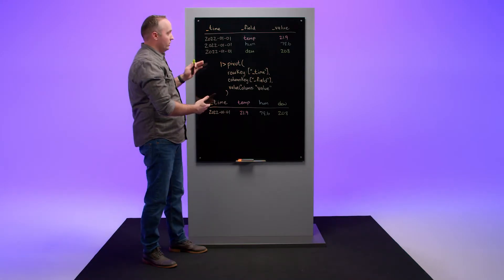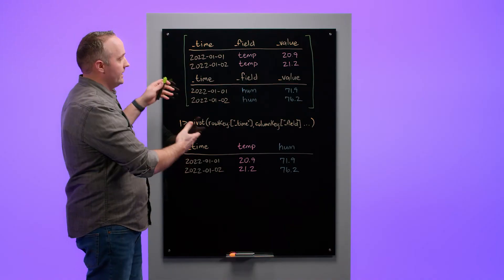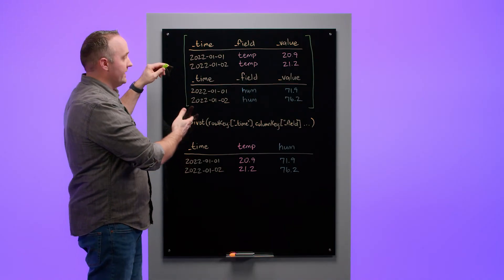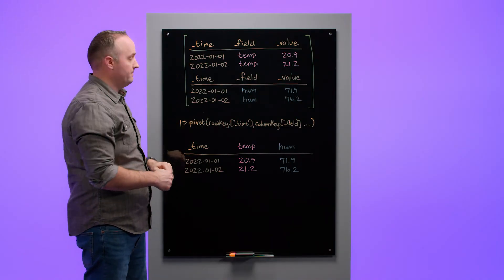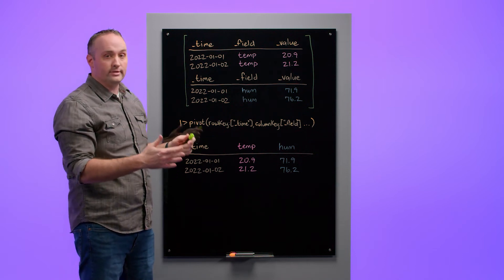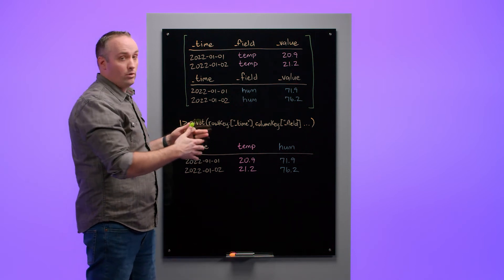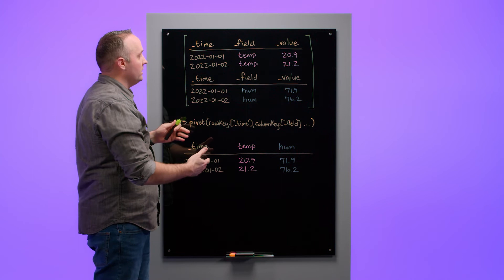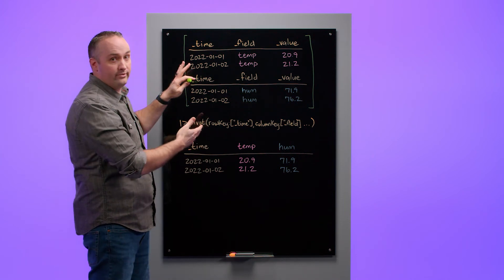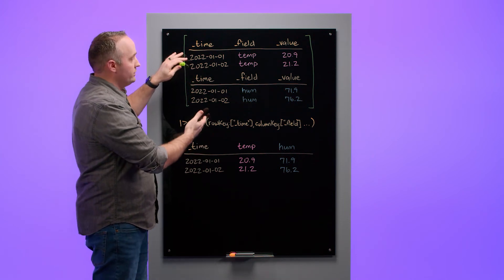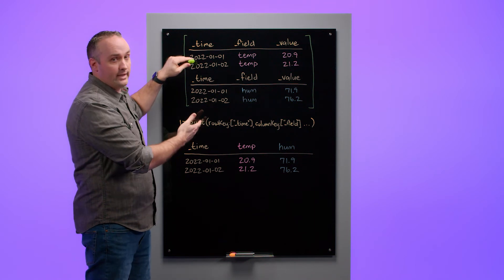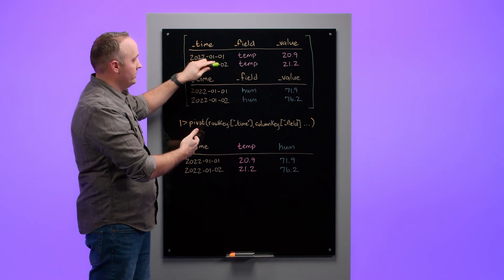Now let's move on to a more complex example. This data more accurately reflects data you might actually query from InfluxDB. Pivot operates on a stream of tables, which contains zero or more tables, and InfluxDB returns tables grouped by field. So because we're querying two different fields, we have two different tables in our input data: temperature and humidity.